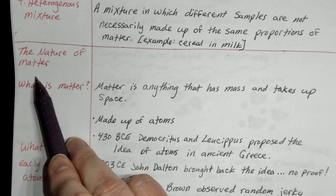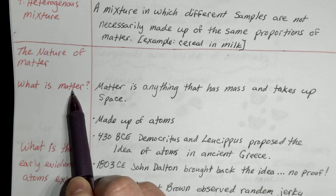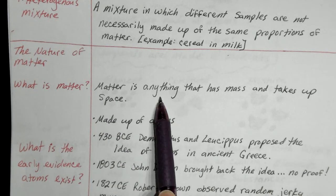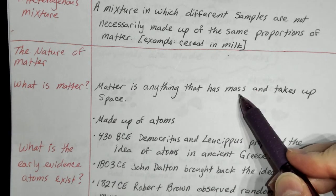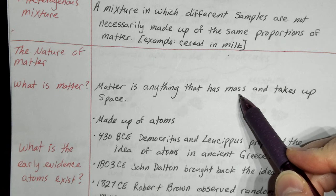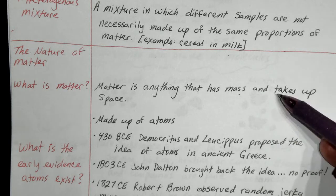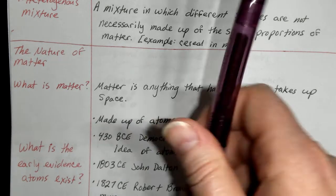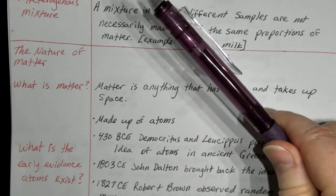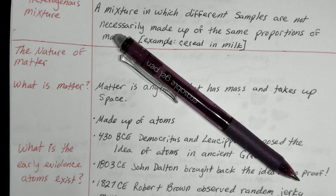So, the nature of matter — what is matter? Matter is anything that has mass and takes up space. Mass means you can put it on a scale or a balance and measure how much it weighs. Takes up space means it occupies volume — like my pen, it's taking up space, and I can put it on a scale and figure out how much it weighs.